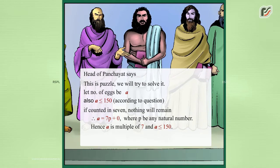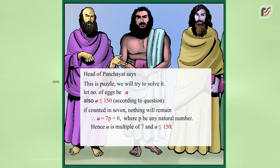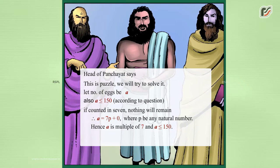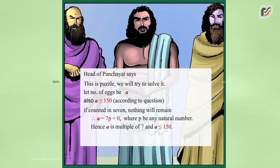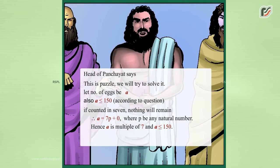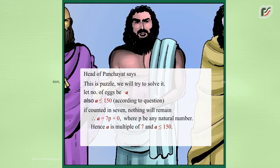The head of the panchayat said, 'This is a puzzle. We will try to solve it. Let the number of eggs be a. Also, a is less than or equal to 150, according to the question. If counted in sevens, nothing will remain. Therefore, a is equal to 7p plus zero, where p is any natural number. Hence, a is a multiple of seven and a is less than or equal to 150.'